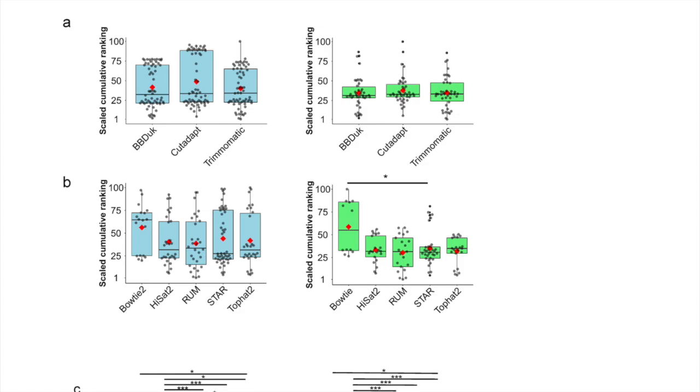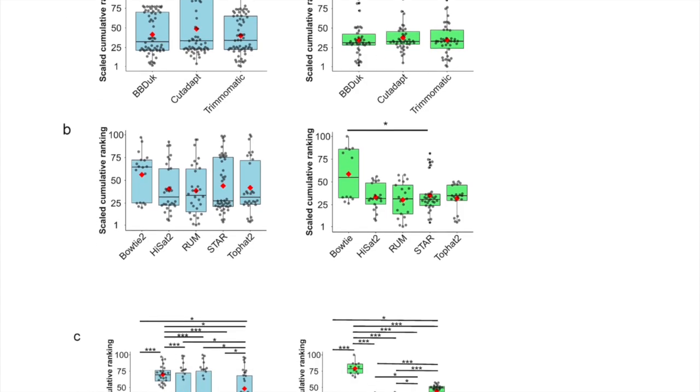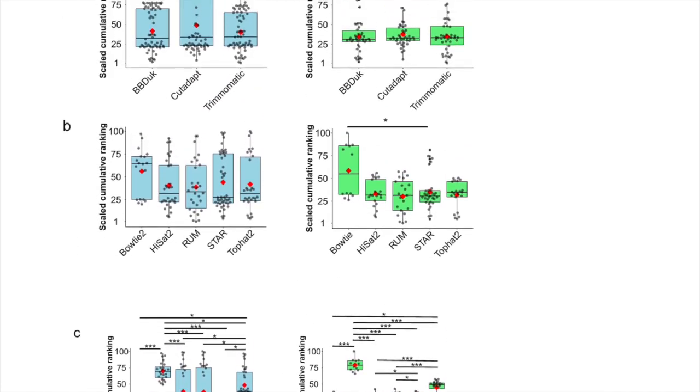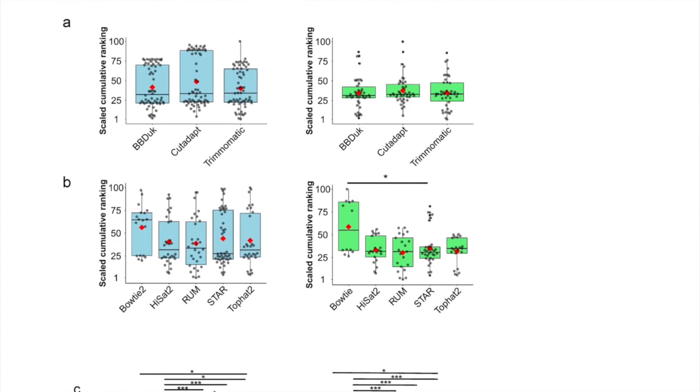And this was for, basically, the one to the left includes all of the pipelines that output raw reads, effective counts, estimated counts, and coverage. The green took out the pipelines that generated these statistics. But you can see that the lack of statistical significance holds for both of these.